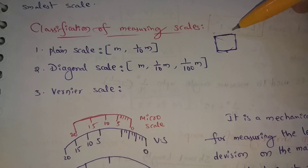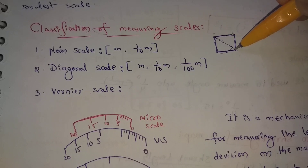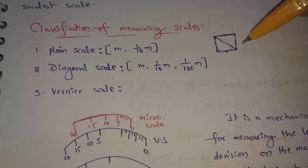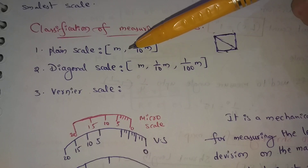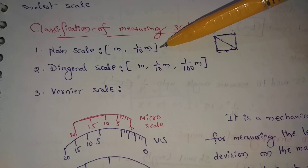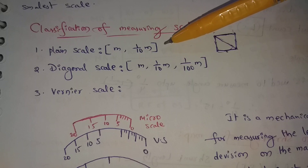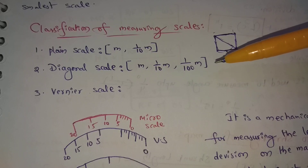The plain scale is two-dimensional — one plane is two-dimensional. That is why the diagonal scale is three-dimensional. So to summarize: plain scale measures two dimensions, and diagonal scale measures three dimensions.